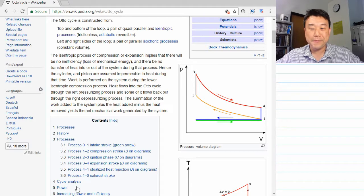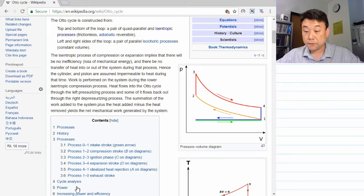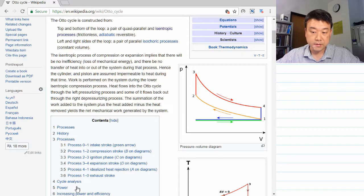But for our purposes, what we care about is the cycle, starting from 1, 2, 3, 4, and back to 1. From 1 to 2, that's adiabatic compression. This is where the piston compresses the fuel air mixture. We assume it happens quickly enough that no heat is exchanged with the surrounding.